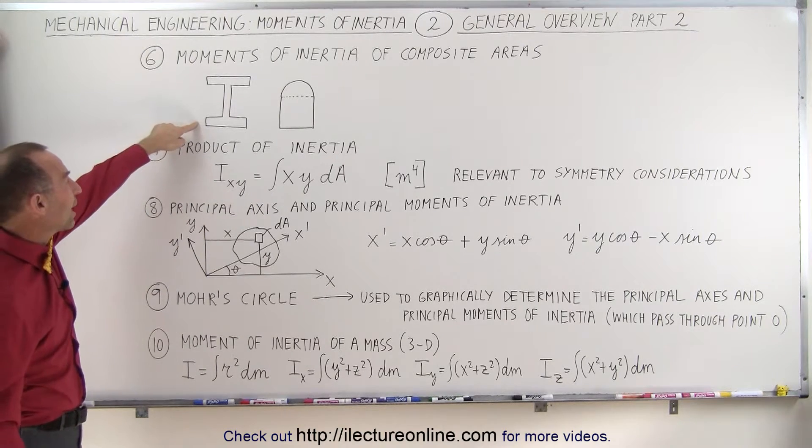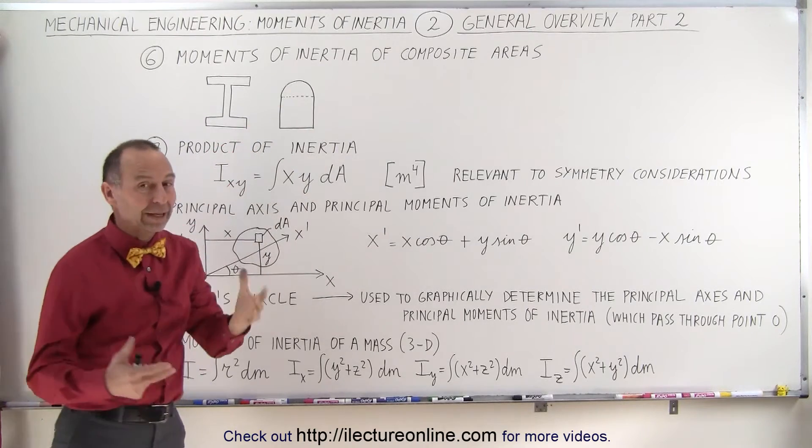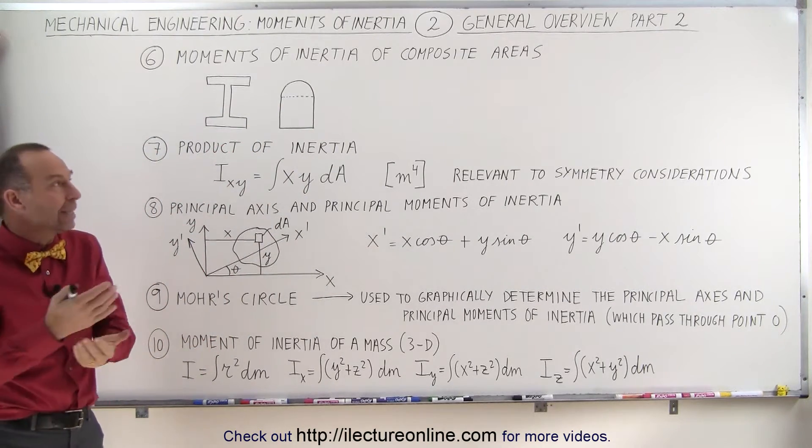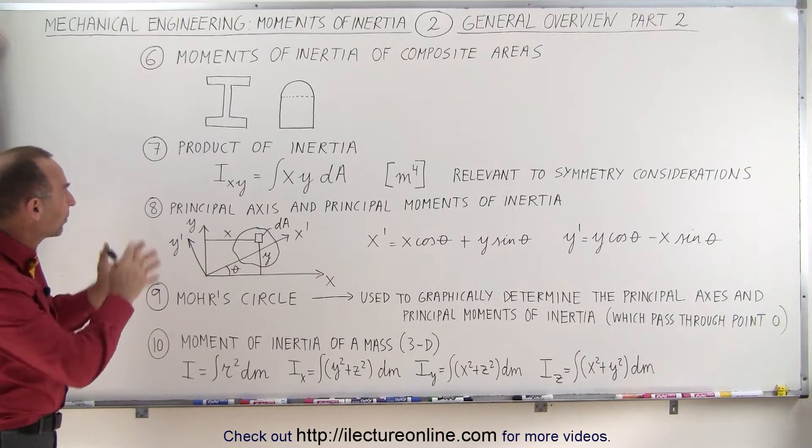You can see the cross-section of an I-beam or you have a rectangular to a semi-spherical area. We combine those and we need to find the combined moments of inertia of these composite areas.